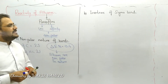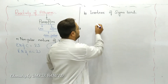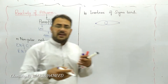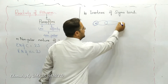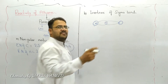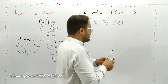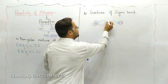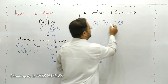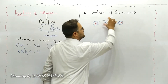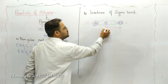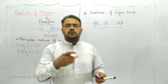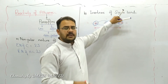In a sigma bond, there is head-to-head overlapping of orbitals. The electrons are present in between two nuclei on the nuclear axis. Since both nuclei are positively charged and the electrons are negatively charged, each nucleus attracts the electrons towards itself. Therefore, electrons are tightly bound between the two nuclei in case of a sigma bond.